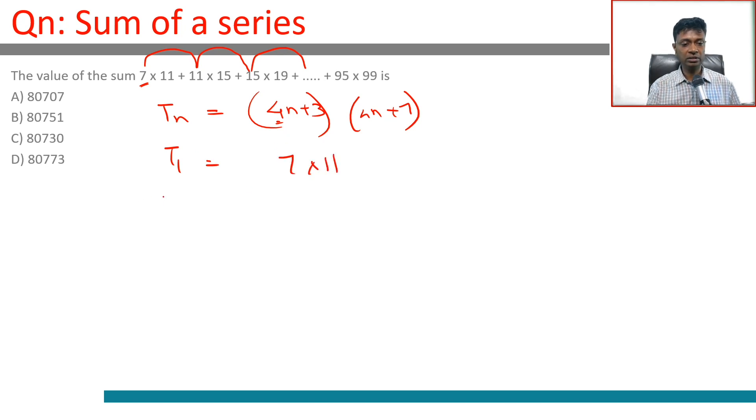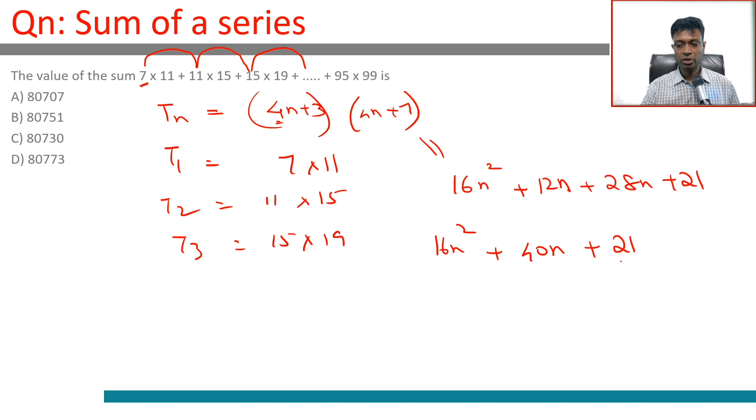So nth term of this expression is 4n plus 3 into 4n plus 7. T1 is 7 into 11, T2 is 11 into 15, T3 is 15 into 19 and so on. If you expand this, this is 16n square plus 12n plus 28n plus 21, or 16n square plus 40n plus 21.